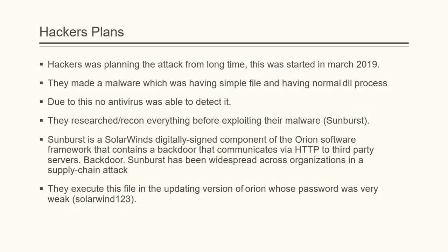In a supply chain attack, once one system is compromised it will spread further and take over other systems on the same network. They executed this file in an updated version of Orion whose password was very weak — it was 'solarwinds123'. This was the first mistake made by SolarWinds, because their password was very weak.